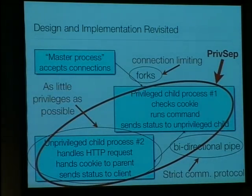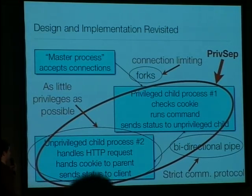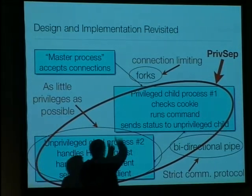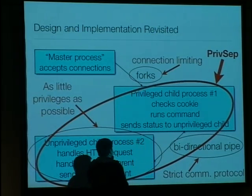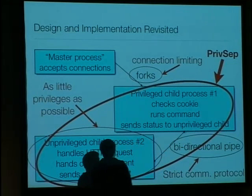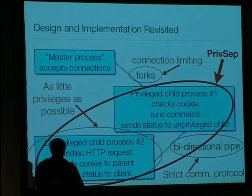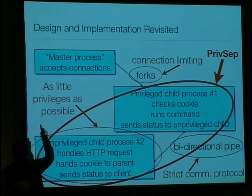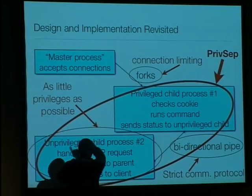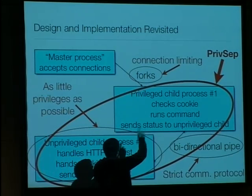When we look at the naive approach that we took and apply the changes and improvements I mentioned — we have the connection limiting here for the forking, a strict communication protocol for the two child processes, and the unprivileged child process really has as little privileges as possible. This whole concept of the communication protocol and as little privileges as possible — this all together is the privilege separation.